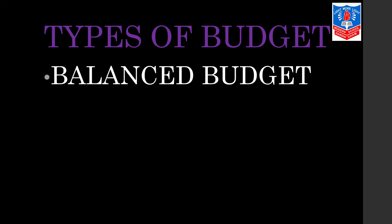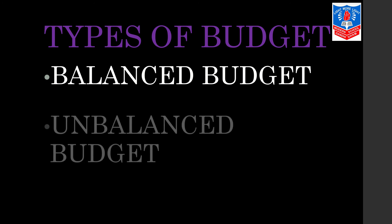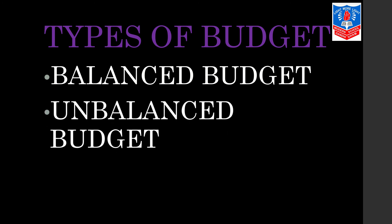Today, I'll start with the types of budget. Basically, in budget, there are two types. The very first one is the balanced budget. The second one is the unbalanced budget. The unbalanced budget is of two types — one is the deficit and the other is the surplus.